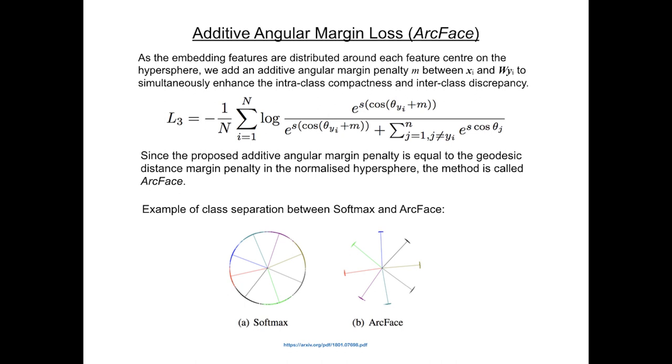Below is an example of class separation between ArcFace and Softmax. The experiment was made using images of 8 different identities with around 1500 images each. As the image shows, the Softmax loss provides roughly separable feature embedding, but produces noticeable ambiguity in decision boundaries, while the proposed ArcFace loss can obviously enforce a more evident gap between the nearest classes.